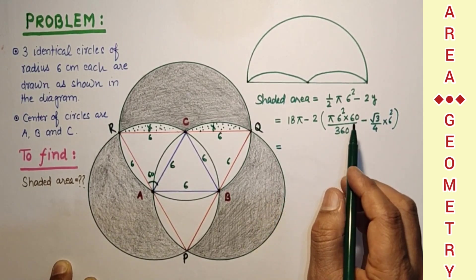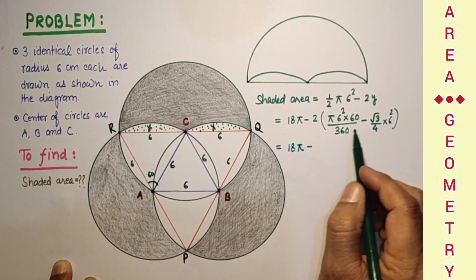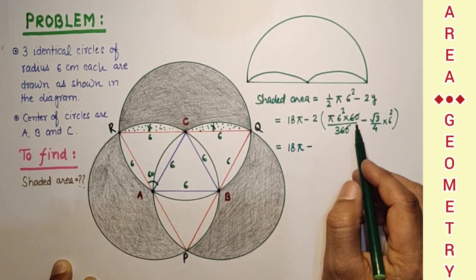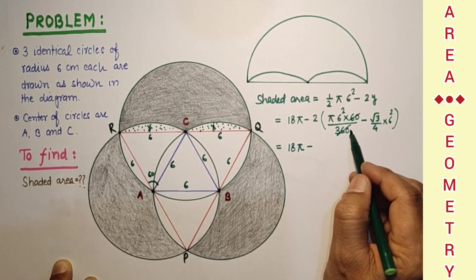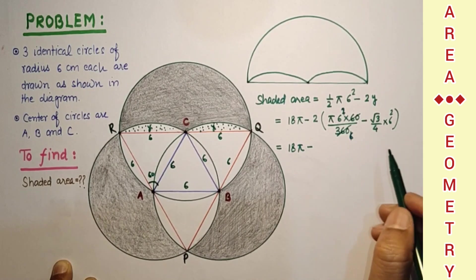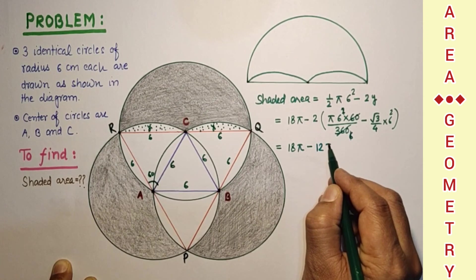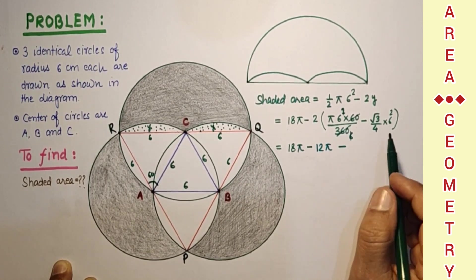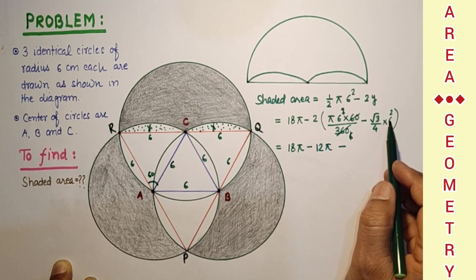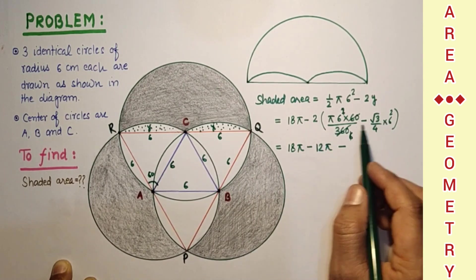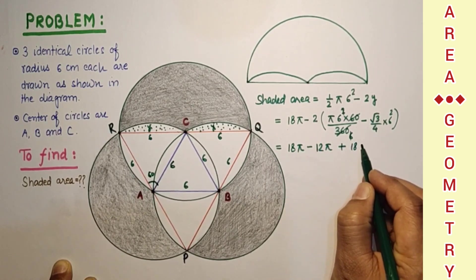So that we found 18 pi minus. These two 18 pi will get cut. 60 times 6 and this 6 and this will get cut. So it is 6 pi into 2, 12 pi minus, plus 36 by 4 is 9, 9 minus 9 root 3. So plus 18 root 3.